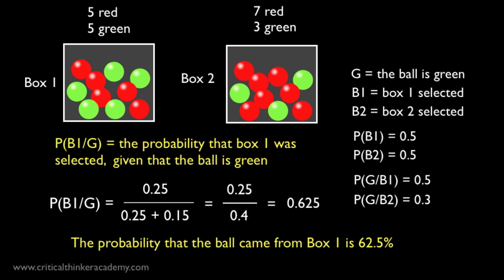But Bayes' Rule gives us a precise estimate of how much more likely it is. That's the power of the rule.